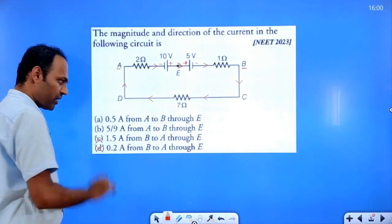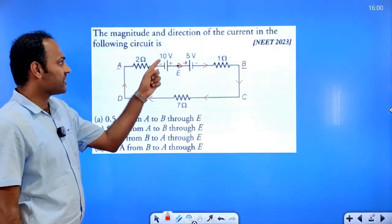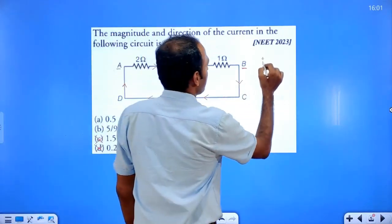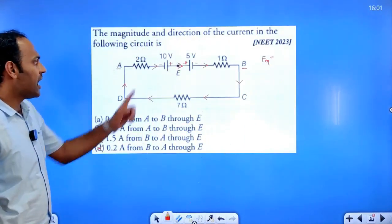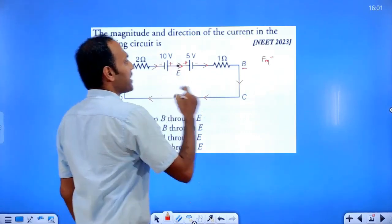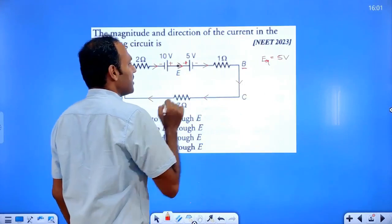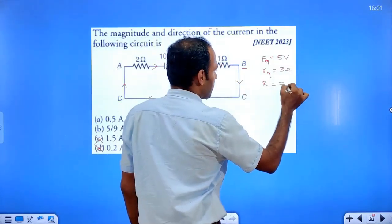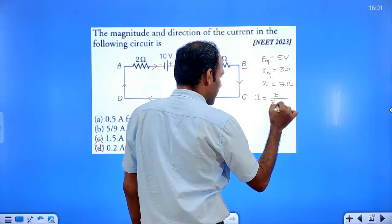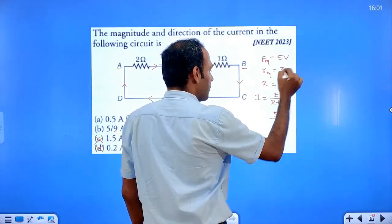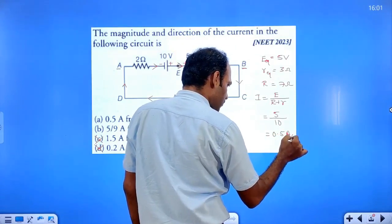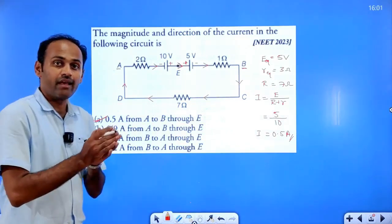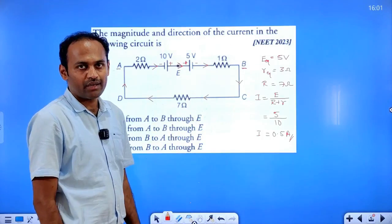To find the magnitude: equivalent EMF = 10 minus 5 = 5 volts (opposite order, so subtract). Equivalent internal resistance = 2 plus 1 = 3 ohms. External resistance = 7 ohms. Current = E divided by (R plus r) = 5 divided by (7 plus 3) = 5 divided by 10 = 0.5 ampere. Option A is correct.